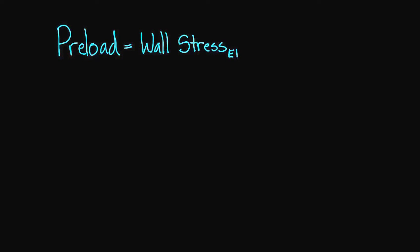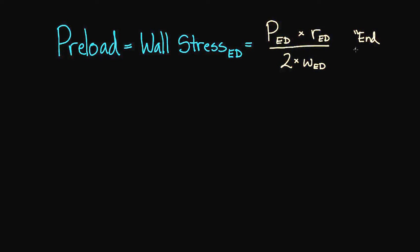Wall stress is measured at a certain point in time. Wall stress at the end of contraction would not be preload. Preload is at the beginning of contraction, or rephrased, at end of diastole. The equation looks at three major variables: pressure at end of diastole, radius at end of diastole, and two times the wall thickness at end of diastole. From now on I'll just write 'ed' for end of diastole, since it's a specific point in time on the pressure-volume loop of the left ventricle.